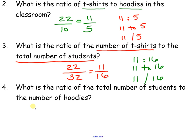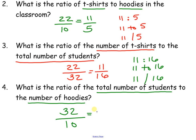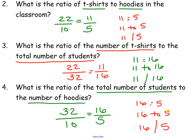Last but not least, what is the ratio of the total number of students to the number of hoodies? The total number of students was 32, and the total number of hoodies was 10. We need to simplify — our GCF is 2, so we get 16 over 5. Write your ratio three ways: 16 colon 5, 16 to 5, and 16 slash 5. That was a great example of using real life data to write ratios. Make sure that you simplify every single time, and the easiest way to do that is to write it as a fraction before you write it as a ratio.